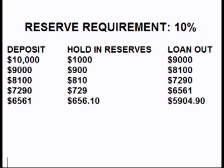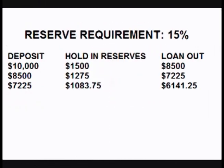This process can keep continuing indefinitely, with the potential of adding 10 times the original deposit into the money supply. Now let's look at that same example with the reserve requirement at 15%. The original person deposits $10,000 into the account; however, the bank must hold $1,500 in reserves.